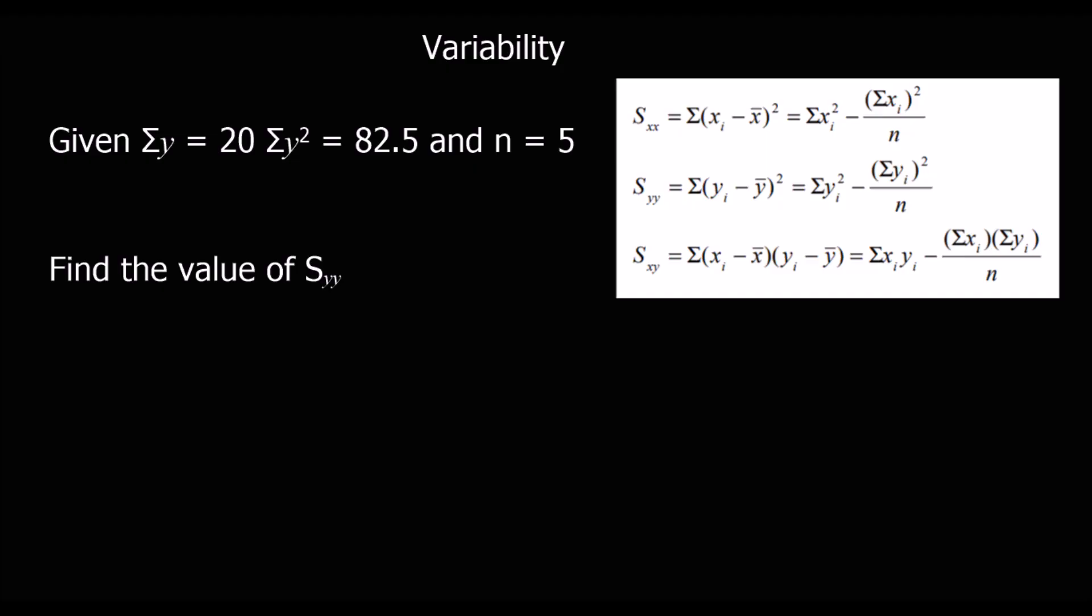This time we're going to work out SXY. So again, we're going to be substituting in to start with. So it's the sum of Y squareds, which is 82.5, minus the sum of Y squared, so 20 squared, over how many, which is 5. So we type that into the calculator, and that will give us our SXY. And that's 2.5.